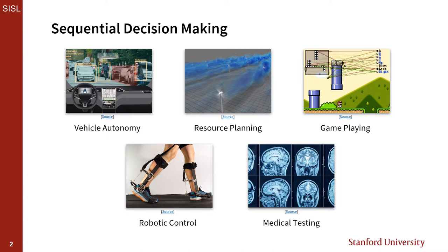In the machine domain, we've applied formal sequential decision-making methods to a wide variety of problems, ranging from autonomous vehicle control to resource planning to automated medical diagnosis and testing.